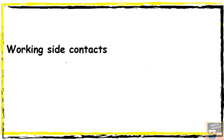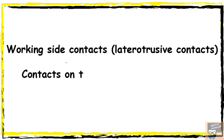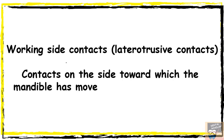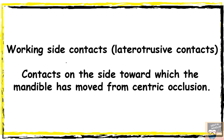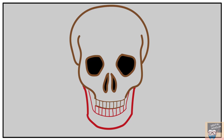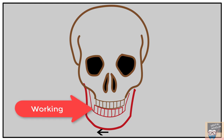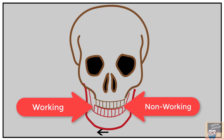Now let me tell you about the working and non-working side contacts. The working side contact is also known as the laterotrusive contact. This is the contact on the side towards which the mandible moves from centric occlusion. For example, if you move your mandible towards the right side, the occlusal contact on the right side is the working contact, whereas the contact on the left side in this same movement is the non-working side contact.